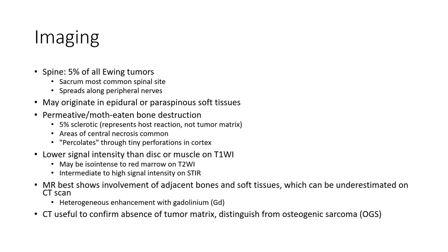Imaging of the spine: Ewing sarcoma accounts for 5% of all Ewing tumors. Common spinal sites include spirits along peripheral mode. It may originate in the epidural or cavernous spinous soft tissue. Bone destruction is predominantly lytic, with 5% sclerotic, representing host reaction or tumor matrix. Areas of central necrosis are common.